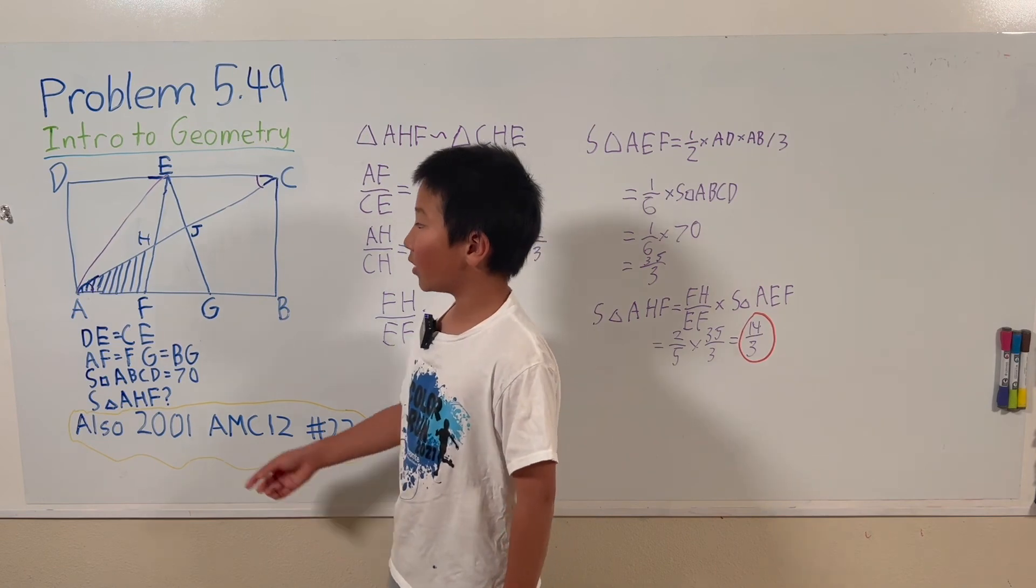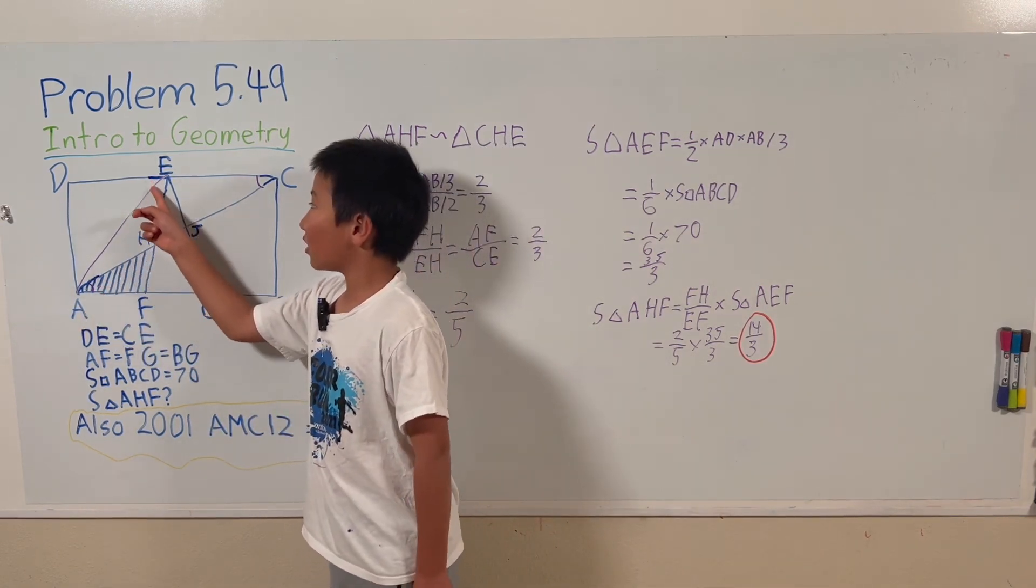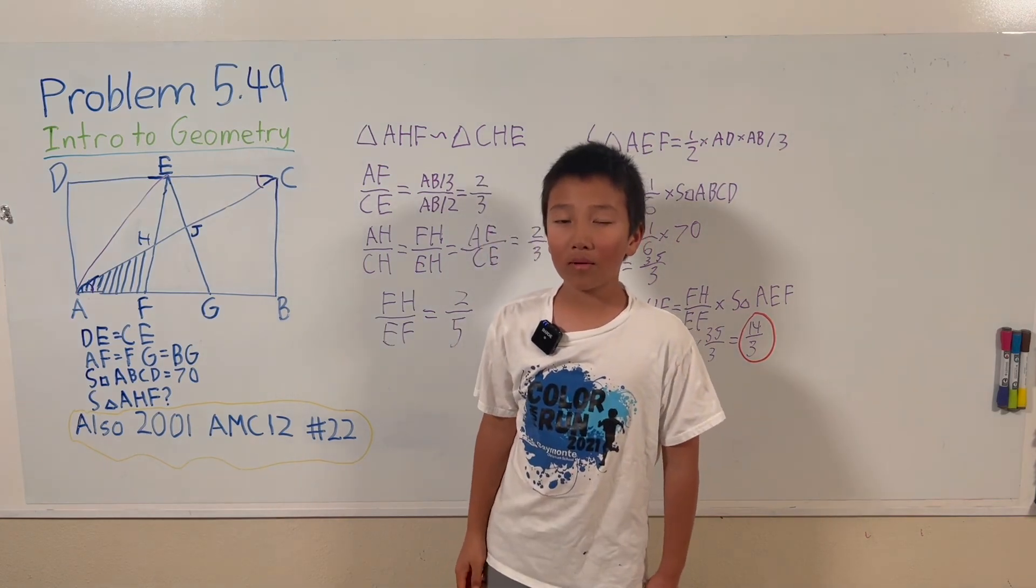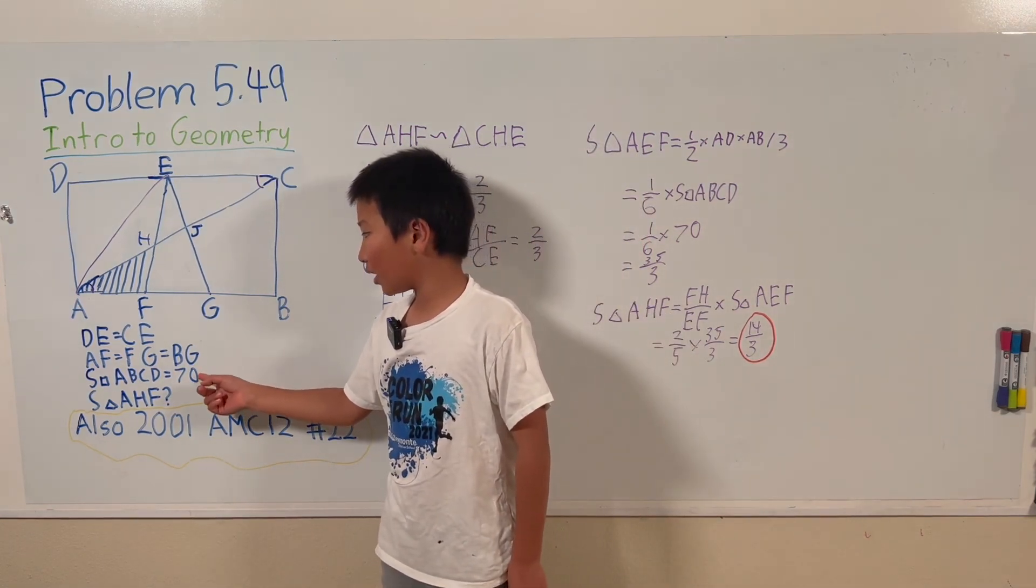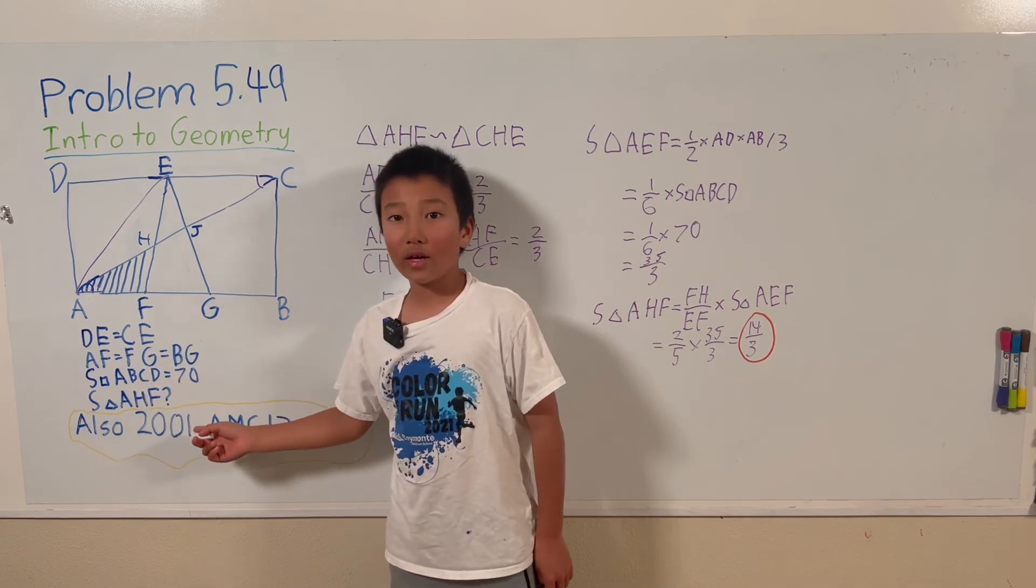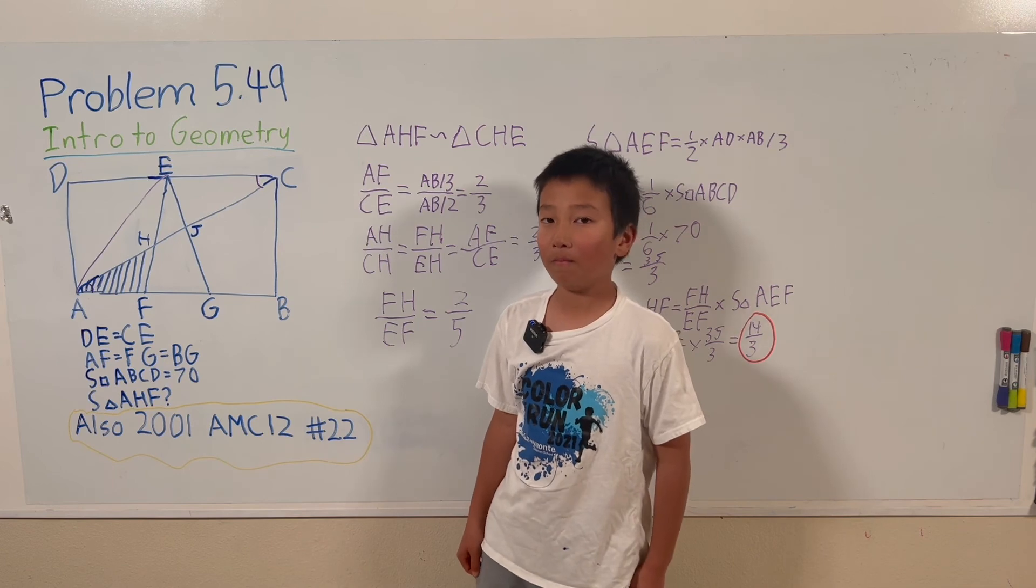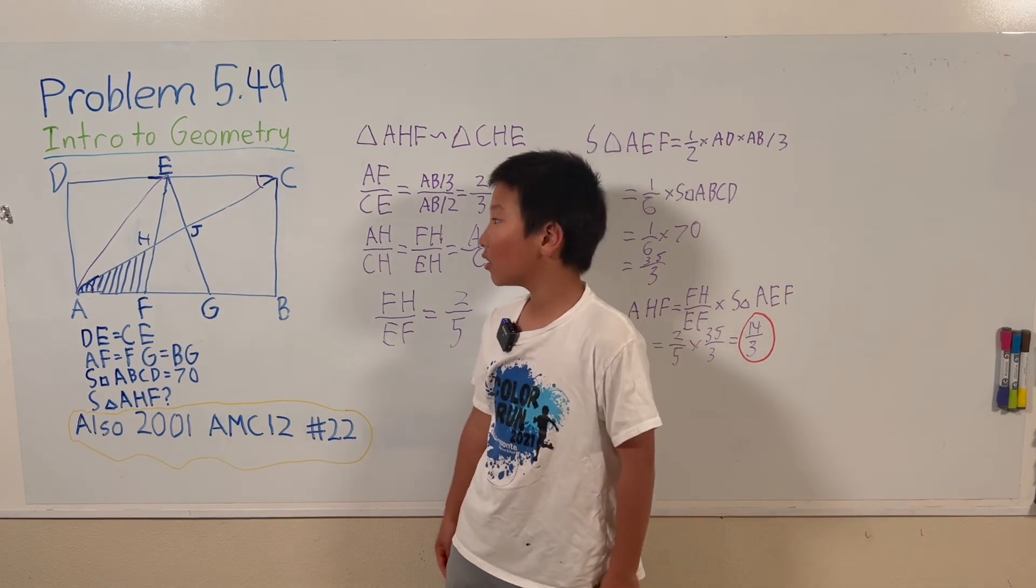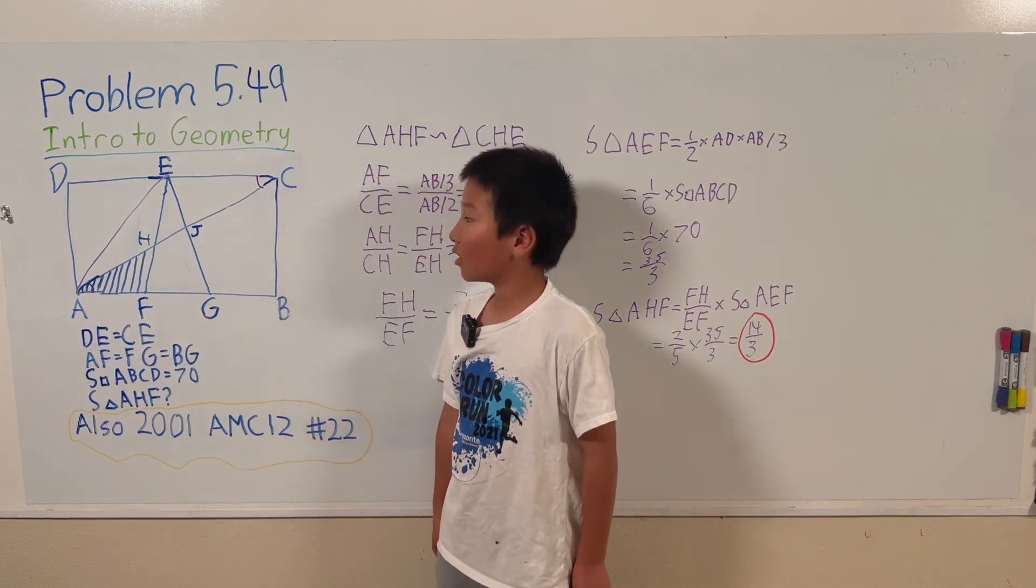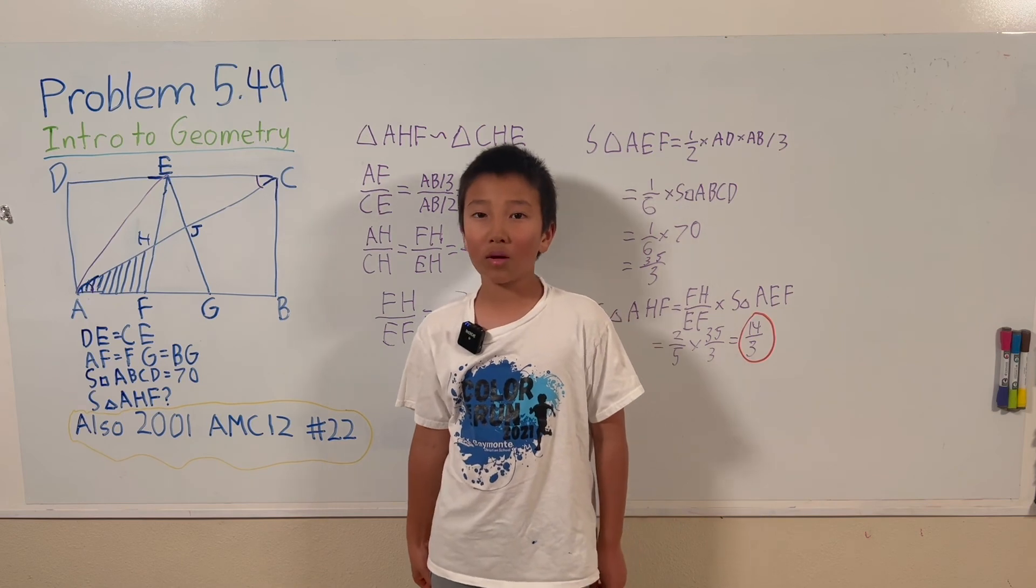You may be wondering how I came up with connecting points A and E to solve this problem. I needed to use the clue that the area of rectangle ABCD equals 70. So I found out a way to connect the areas of AHF and the area of ABCD together to solve this problem.